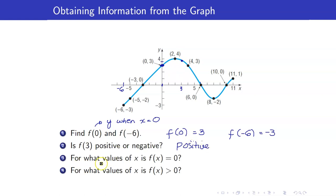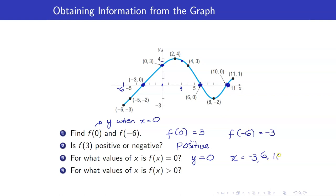Next, for what values of x is f(x) equal to 0? When f(x) equals 0, the y-coordinate equals 0, meaning the graph intersects the x-axis — those are the x-intercepts. The values of x are negative 3, 6, and 10.